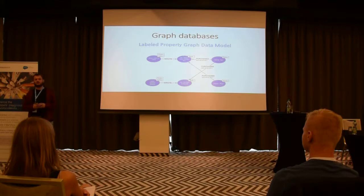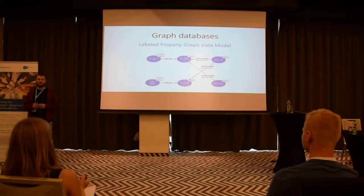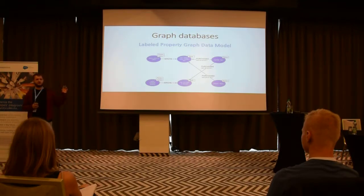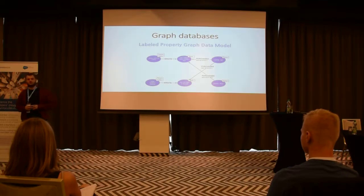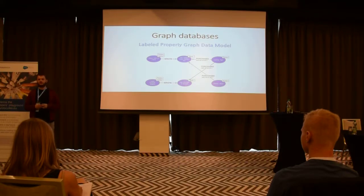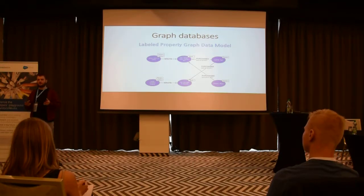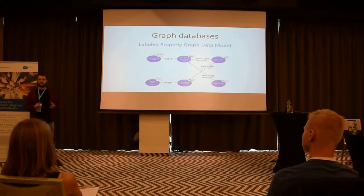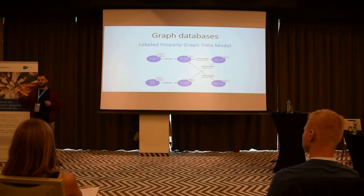The next type of database is not even similar to the previous ones — this is the graph database. Graph databases store information as a set of nodes and the relations between those nodes. For example, we can have a node representing an actor, a relation representing the movies the actor played in, and another node representing those movies. These databases are very cool because they imitate how we organize information on a daily basis — we usually think in terms of simple nodes like persons, books, objects, or products, and the relations we see between them.